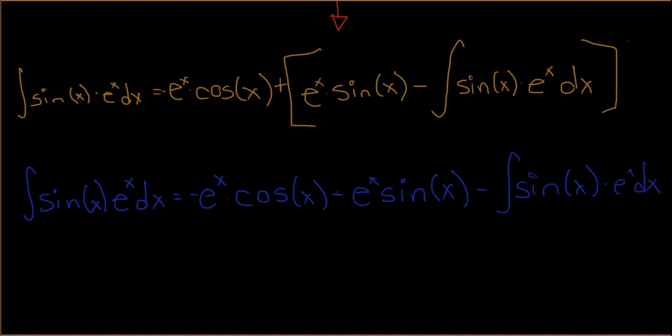Now there's something interesting here. If you notice, this and this are the same. And this is a minus sign, so we know we can get rid of it on this side by adding it. So let's add that to both sides. So we add it over here, plus this, plus sine of x integral e to the x dx. Those go away.